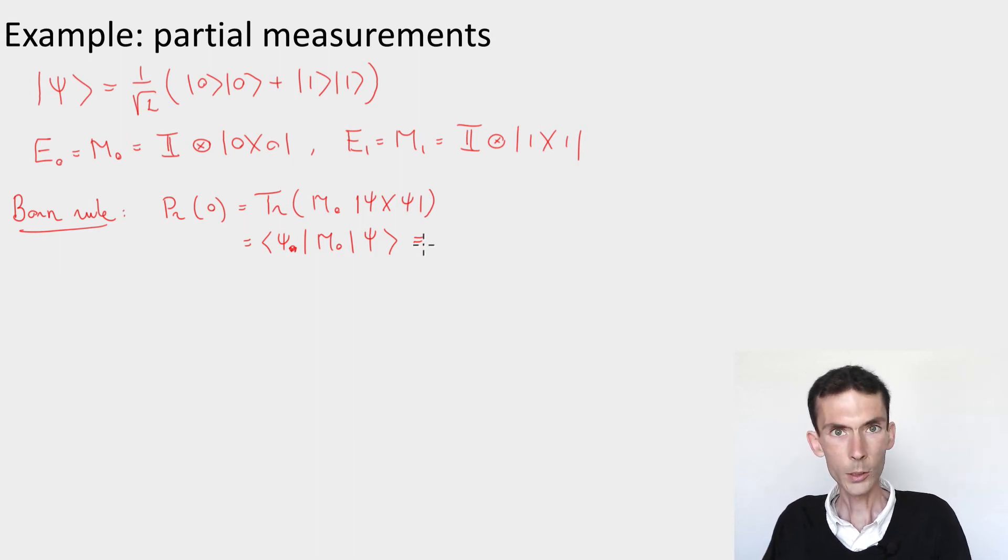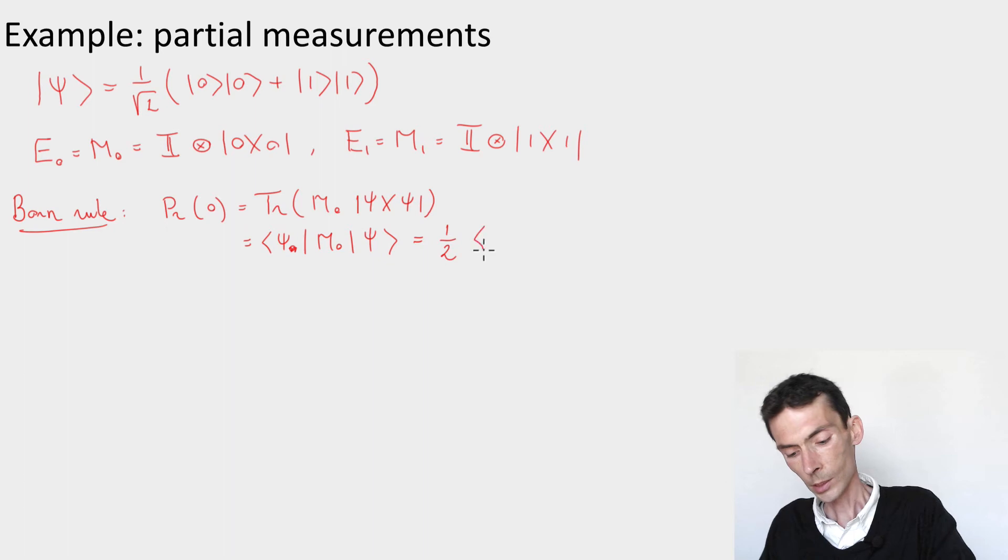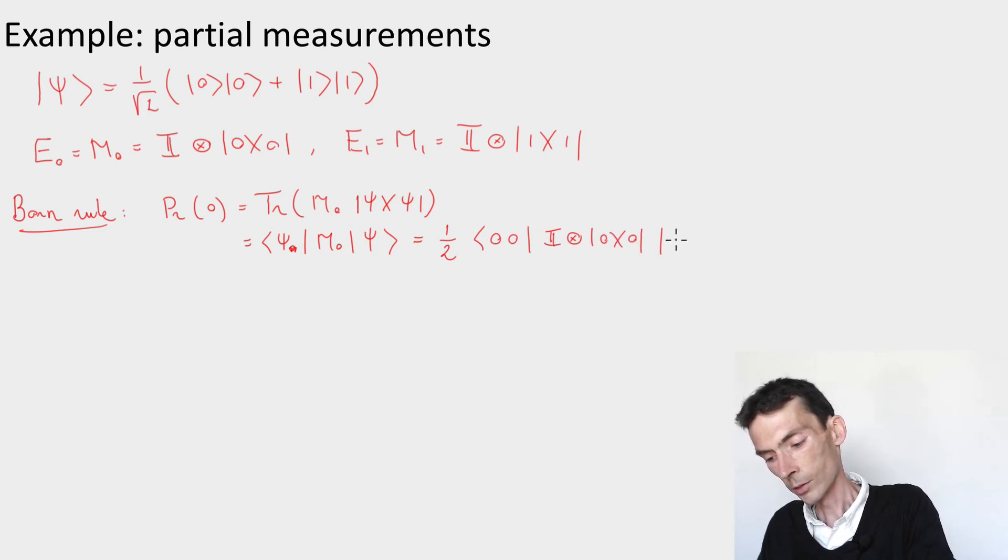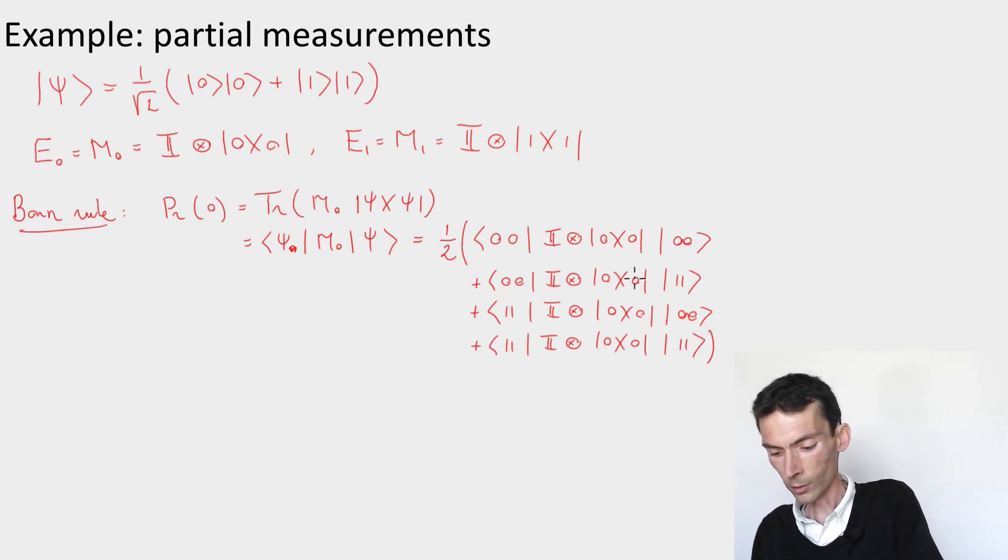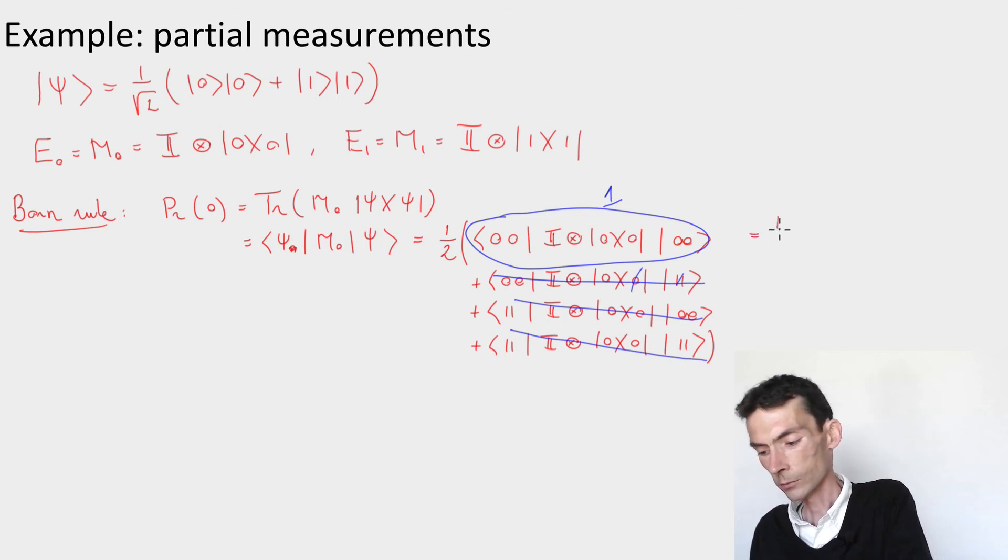And this you can compute. So if I look at the overlap here, let's compute it explicitly. So I'll get four terms. These terms will look like ⟨0,0| then I have identity tensor |0⟩⟨0|, and |0,0⟩. Then I have four such terms. So now you see that a lot of these terms are going to be 0. The second term is 0 because you have the 0 and the 1 here you can cross out. So this is 0. This term similarly is 0. And the last term similarly is 0. The first term, however, evaluates to 1. So what you get for this overlap is a half.